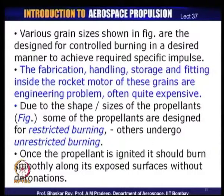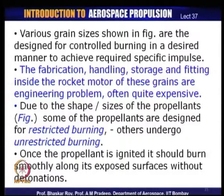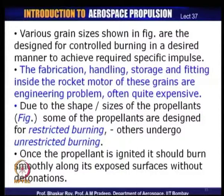Combustion must be controlled — it is fundamentally a controlled, fast burning process. In solid propellant rockets, the control of burning is built into the shape and size of the propellants — the grains. Since they are solid bodies, they must be fabricated in factories, handled and stored after fabrication, and then fitted inside the combustion chamber of the rocket motor. There are many steps and serious engineering issues involved before these propellants are actually used in a rocket.